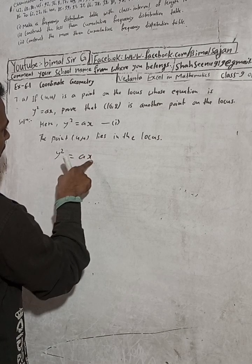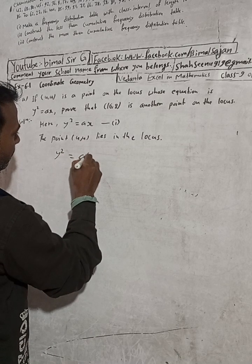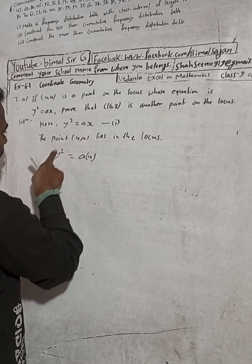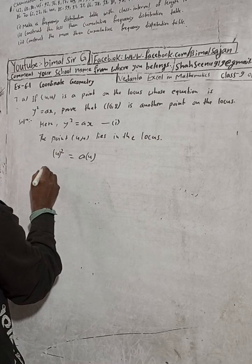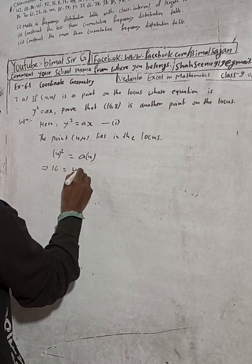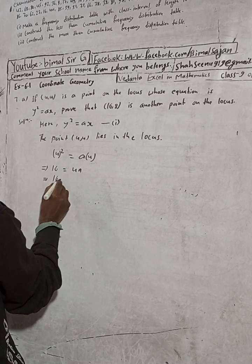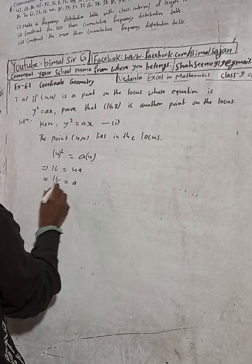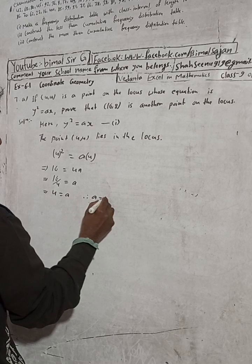So in place of x I will put 4 and in place of y I will put 4. This gives 4² = a × 4, which is 16 = 4a. When 4 goes to the other side it divides, so a = 16 ÷ 4, which gives a = 4. Therefore our a is equal to 4.